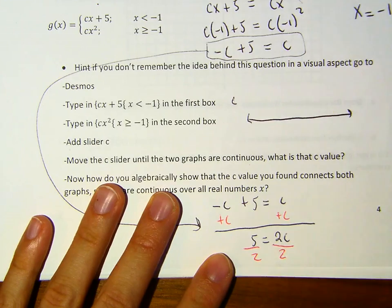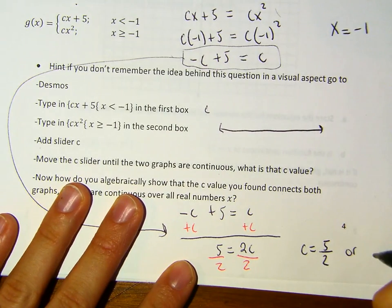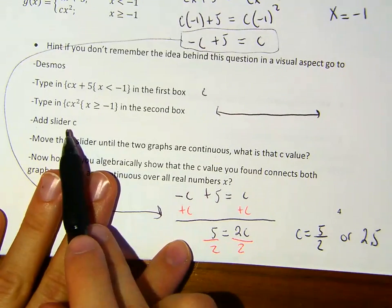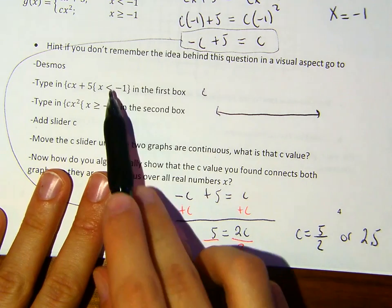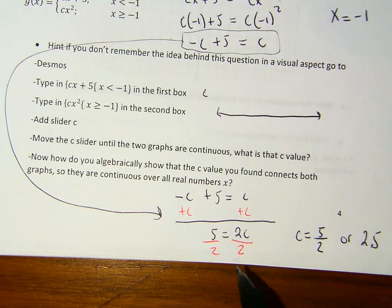So plus C plus C, right? So plus C plus C. And then what do I have? I have five is equal to two C. And then if I have five equals two C, divide two, divide two. So that C is equal to five over two or 2.5. So if you use, if you take the slider and put it at 2.5, it'll make these two functions connect each other. And that's the idea of the question. Let's continue on here.